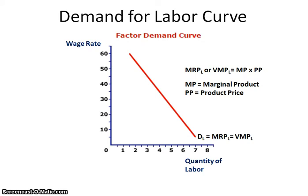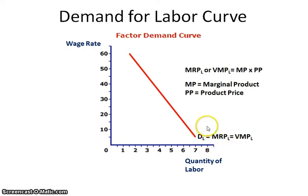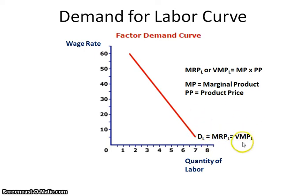The demand for labor curve looks just like a demand curve we've seen before, in that it's downward sloping. What's important to recognize is the labeling. The demand for labor is also referenced as the marginal revenue product for labor or the value of the marginal product for labor. Your book uses the VMP, so instead of labeling it demand for labor, it will label it the VMP for labor — the value of the marginal product. You need to be able to recognize any of these labelings on a multiple choice question, so you know you're talking about the demand for labor curve.